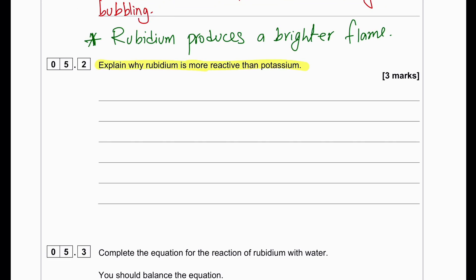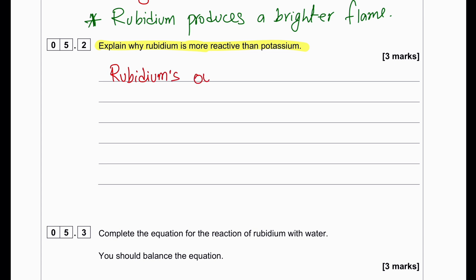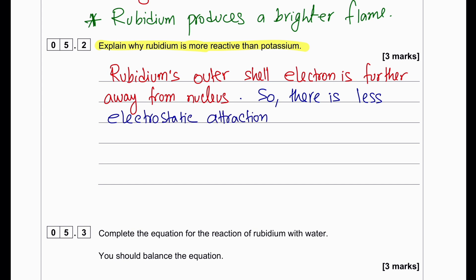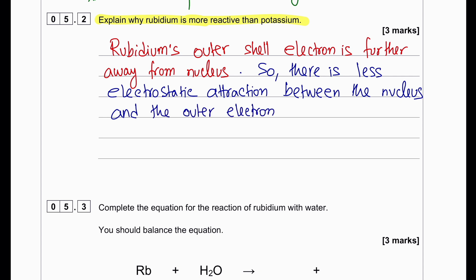Explain why rubidium is more reactive than potassium. Rubidium's outer shell electron is farther away from nucleus because it is a bigger atom. So there is less electrostatic attraction between the nucleus and the outer electron in rubidium. The outer electron in rubidium can be easily lost. Since rubidium belongs to group 1, it just needs to lose one electron in order to do chemical reaction. It becomes increasingly easier compared to potassium for rubidium to lose the outer shell electron.